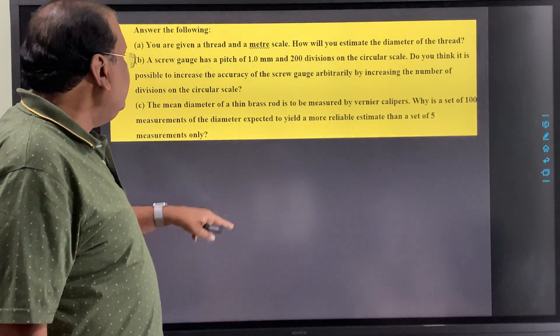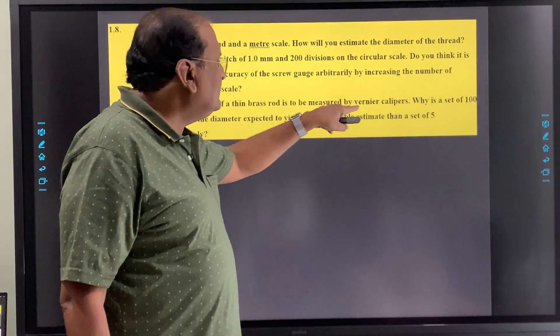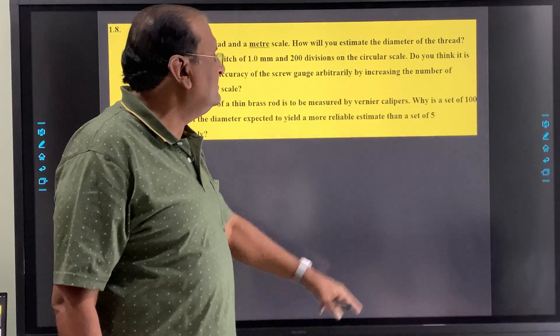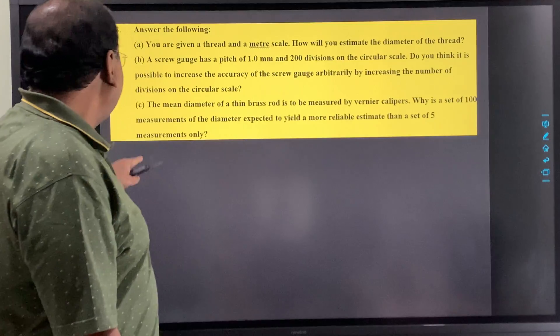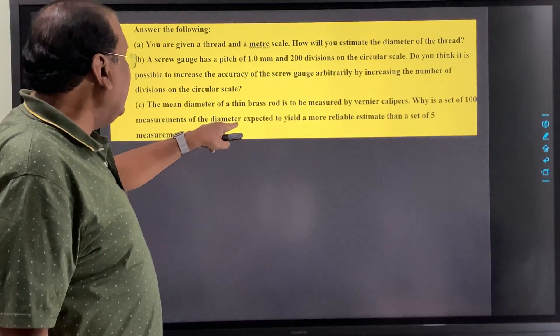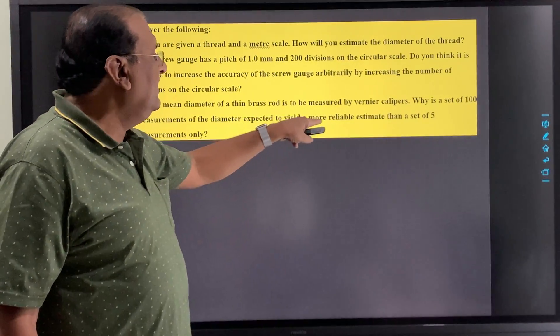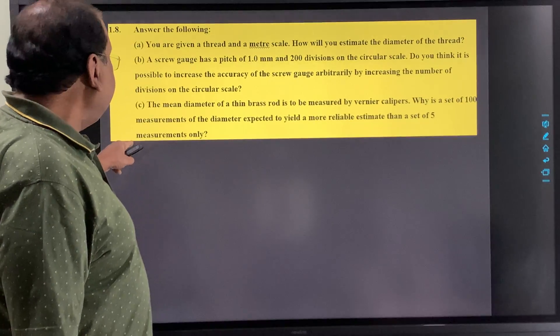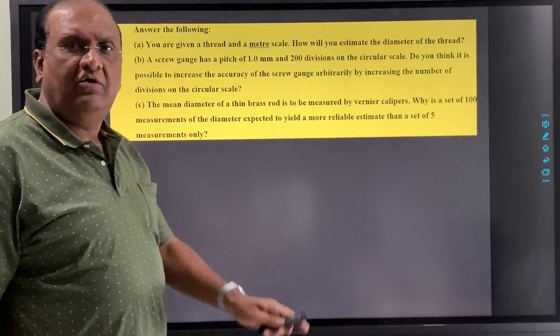C. The mean diameter of a thin brass rod is to be measured by vernier calipers. Why is a set of 100 measurements of the diameter expected to yield a more reliable estimate than a set of 5 measurements only?